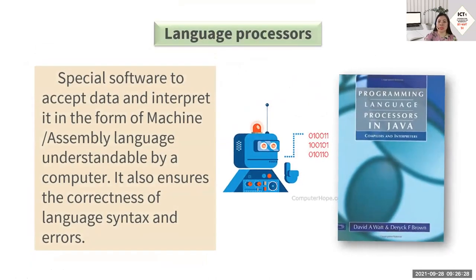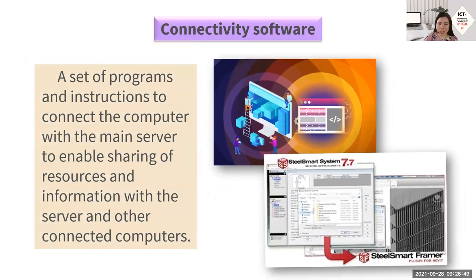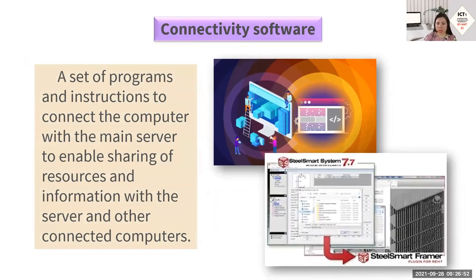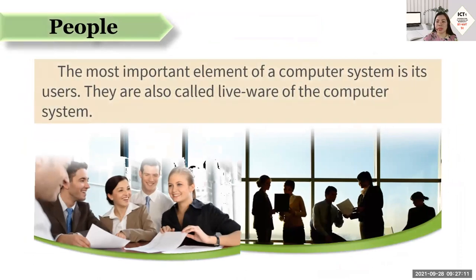We have next language processors — special software to accept data and interpret it in the form of machine or assembly language understandable by a computer. It also ensures the correctness of language syntax and errors. Another is connectivity software — a set of programs and instructions to connect the computer with the main server to enable sharing of resources and information with the server and other connected computers.